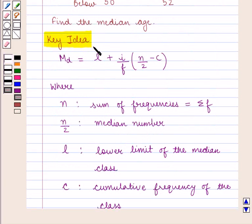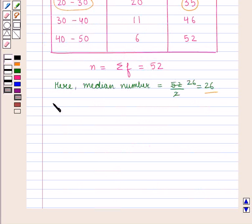Using the formula from the key idea, where median Md = L + (i/f)(n/2 - c).